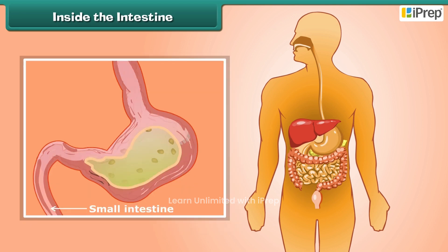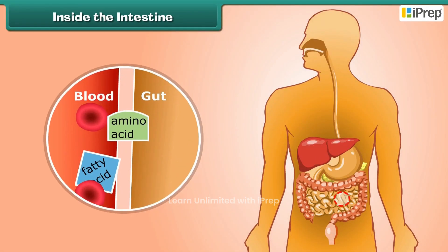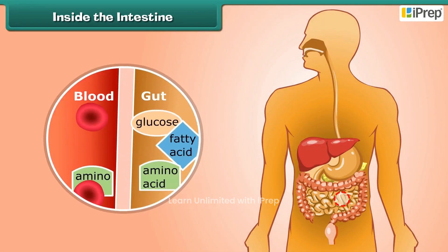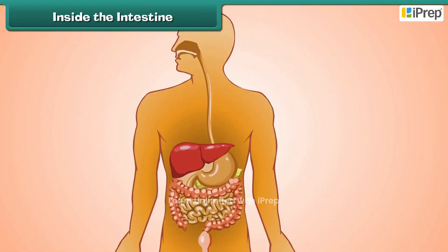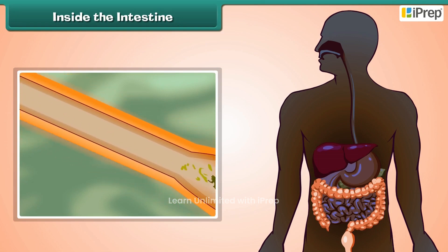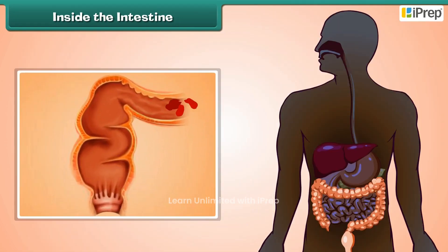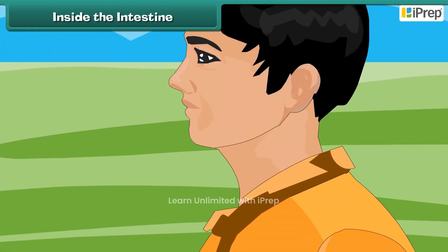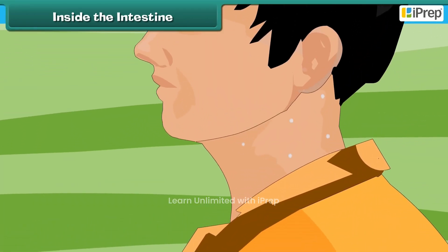Inside the intestine: From the stomach, food goes into the small intestine. The juices of the small intestine further digest the food. The useful parts of the food are then absorbed into the blood. The undigested food goes into the large intestine. The solid waste is then removed from the body through the anus, and the liquid waste is removed in the form of urine and sweat.